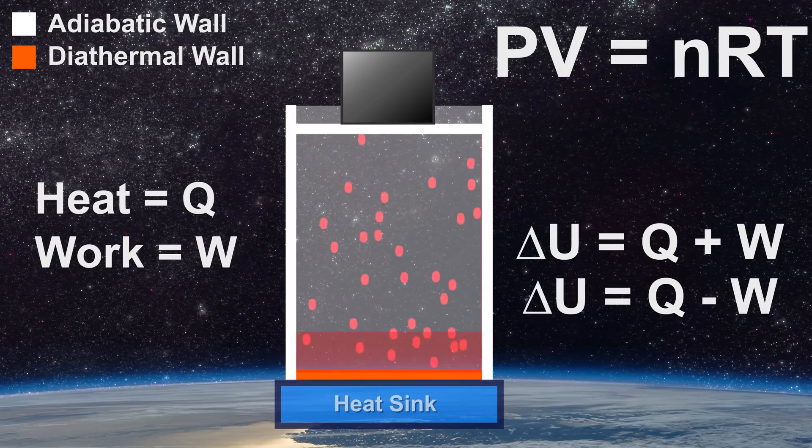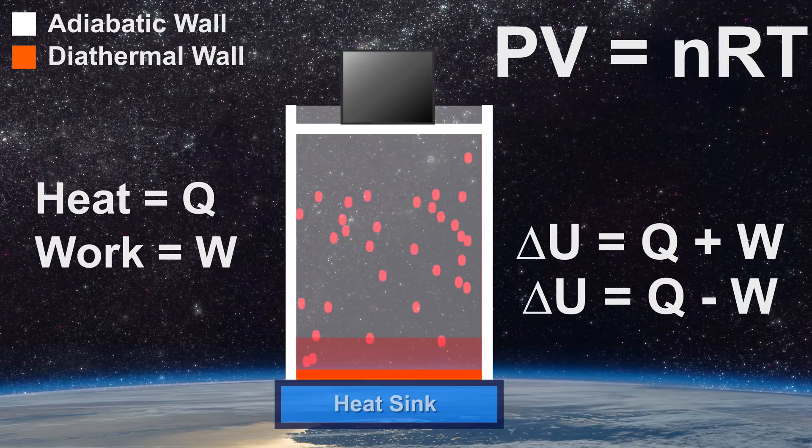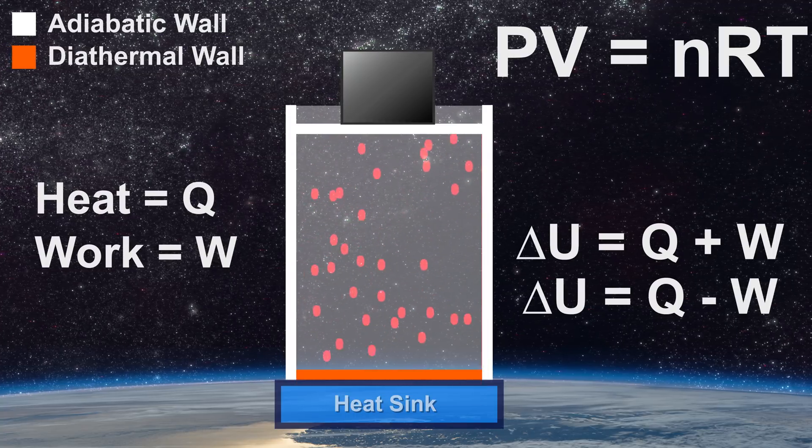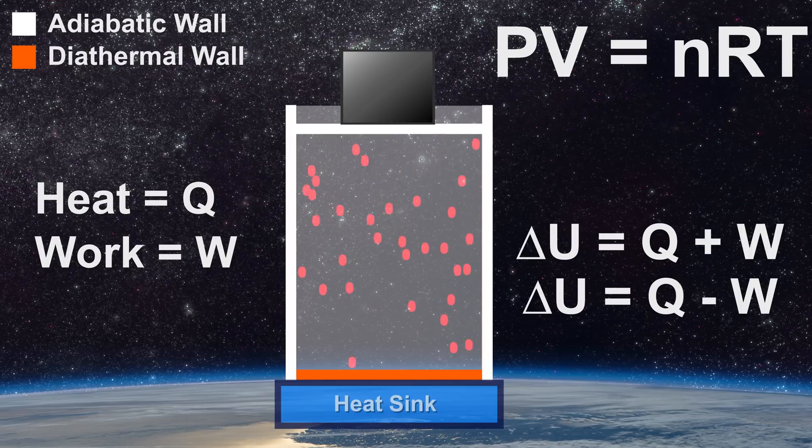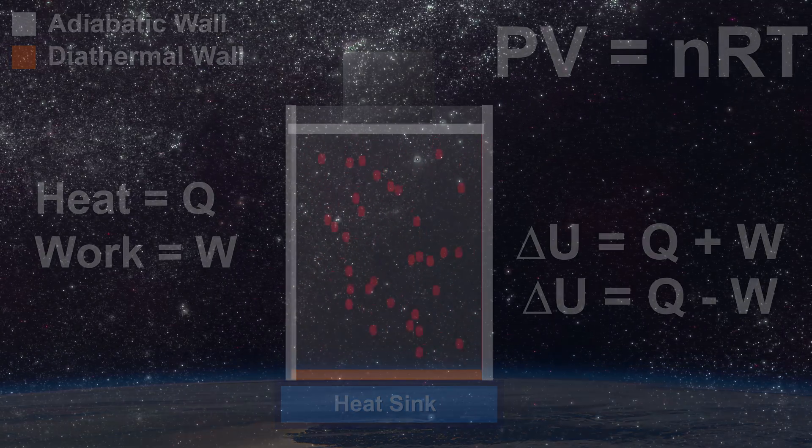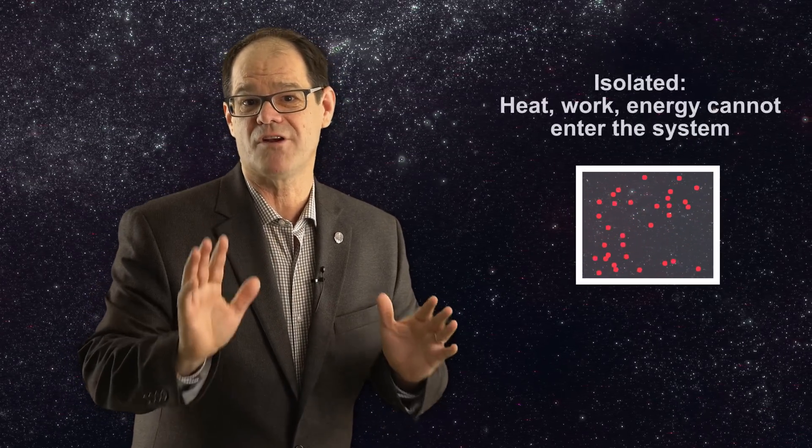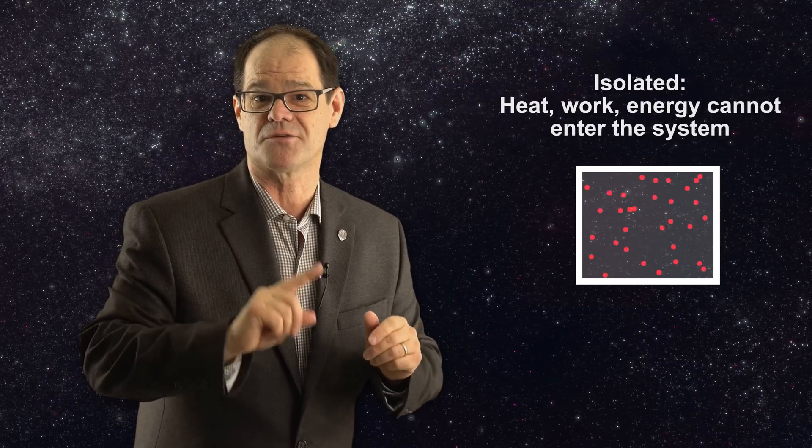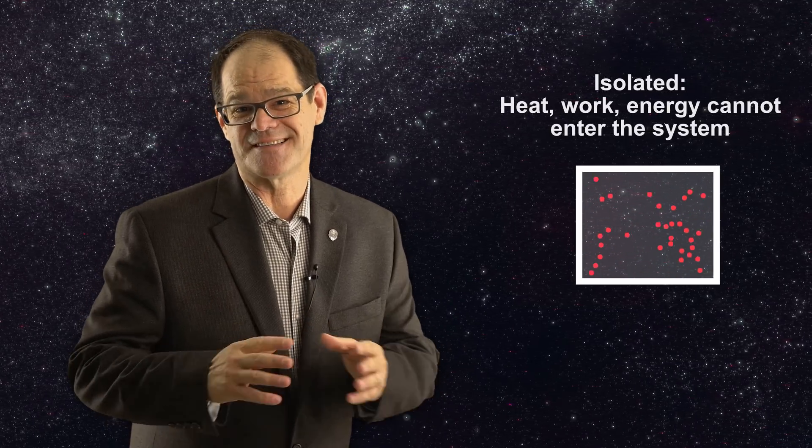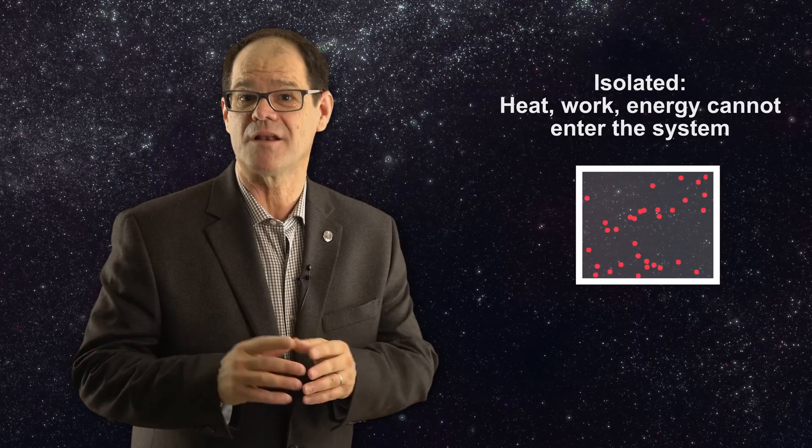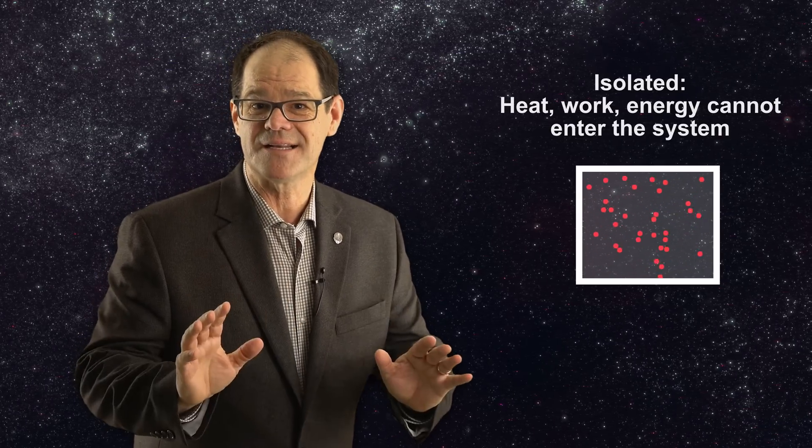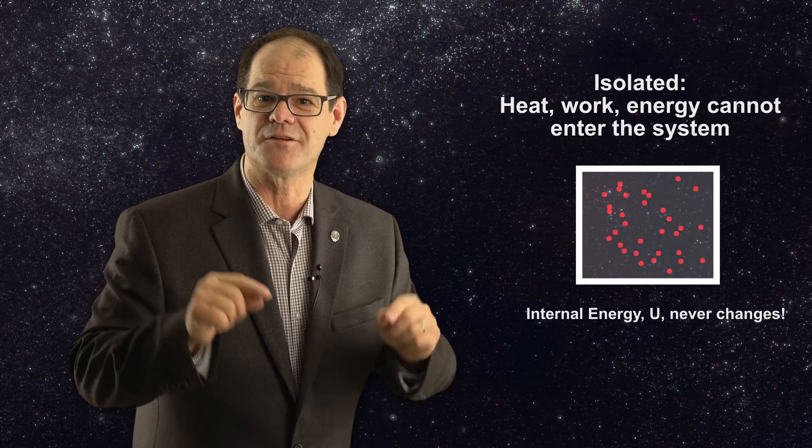By using a closed system, we have shown a relationship between energy, heat and work and formulated a mathematical expression for the first law of thermodynamics. The statement of the first law is even easier in an isolated system since no heat or work can be transferred for such a system from the surroundings. Since the first law states that energy cannot be created or destroyed, an isolated system simply has a constant internal energy.